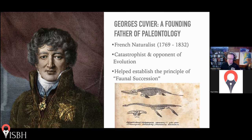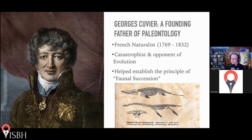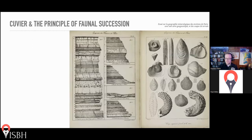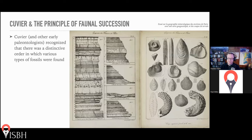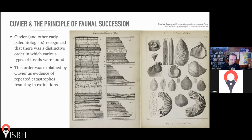Cuvier helped to establish the principle of faunal succession, similar to what we saw with the geologic column — different types of rocks show up at different levels in the Earth's surface. Fossils do something very similar: certain types of fossils show up in a layer, persist for a few layers, and then disappear. Cuvier recognized that as evidence of extinction. This is from one of his surveys of the geology and fossils around Paris, France, where he recognized a distinctive order in which various types of fossils were found.